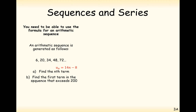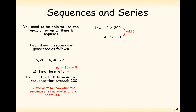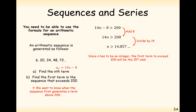Moving on to the next part of the question: find the first term in the sequence that exceeds 200. We set up the inequality 14n minus 8 greater than 200 and solve it. Bearing in mind the solution must be a whole number, we get n greater than 14.857, so the first term that exceeds 200 is the 15th term.